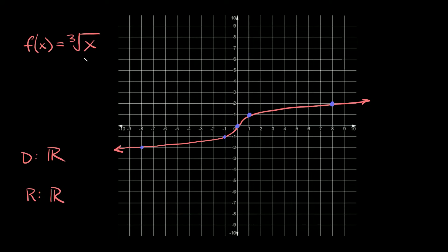Next we have f of x is equal to the cube root of x, the cube root parent function. It looks almost exactly like the cubic function but on its side. It runs through the same kind of points: the origin, one one, and eight two — and on the other side the origin, negative one negative one, and negative eight negative two. The domain and range are both all real numbers.